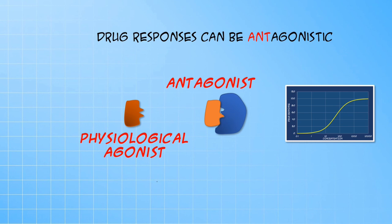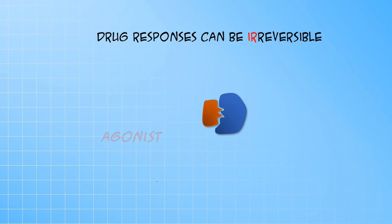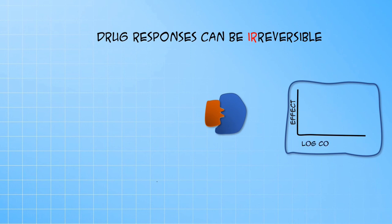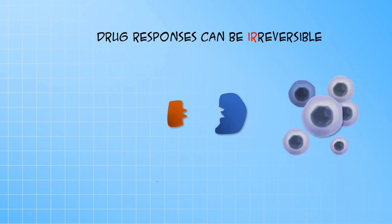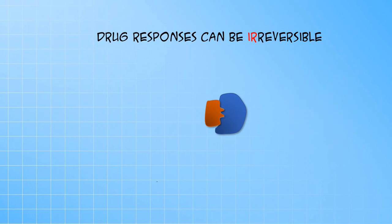Now so far we have been talking about drug receptor generated responses as being reversible. But not all drug responses are reversible — many responses can be irreversible. For example, omeprazole is an irreversible inhibitor of the proton pump. Many oncologicals are also irreversible because they cause destruction of cancer cells. Some drugs on the other hand can stimulate cell growth.